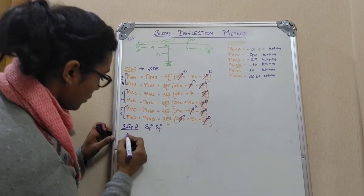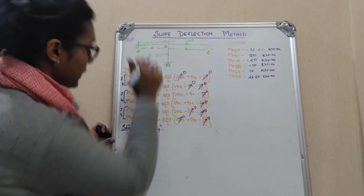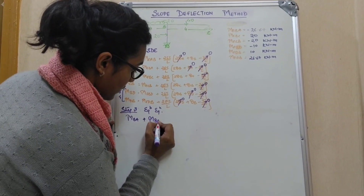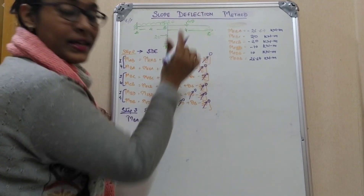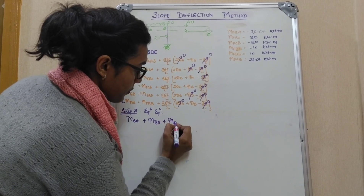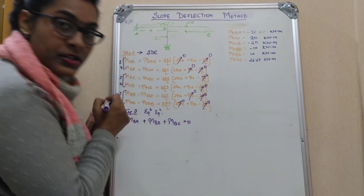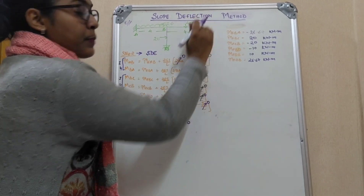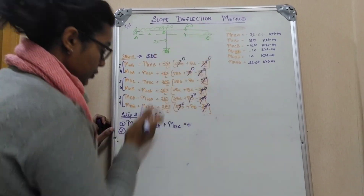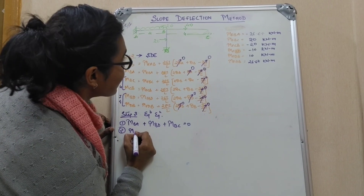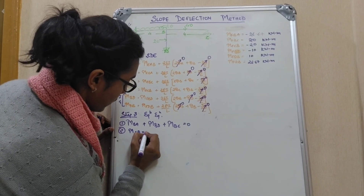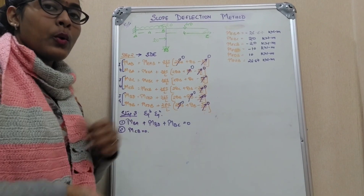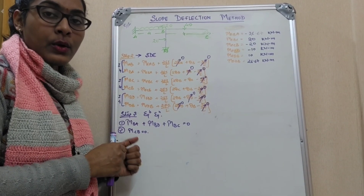Writing the equilibrium equations: the first condition is MBA + MBD + MBC = 0, and the second condition is that moment MCB = 0 because C is a pin joint. With two equations and two unknowns, we can solve for theta_B and theta_C.